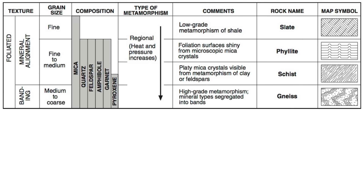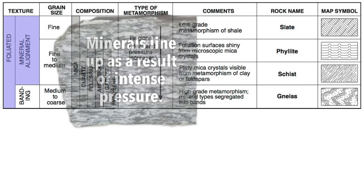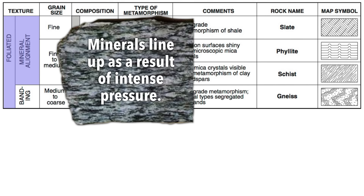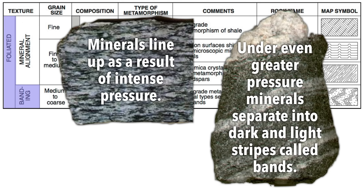These are our regional metamorphism rocks. They are all referred to as being foliated, meaning that pressure is causing the minerals within the rocks to almost line up with each other. We have two types of foliation: mineral alignment, which is when minerals line up as a result of pressure, and a severe version of mineral alignment called banding. The only rock that displays banding is gneiss, and this is a result of really intense pressure.